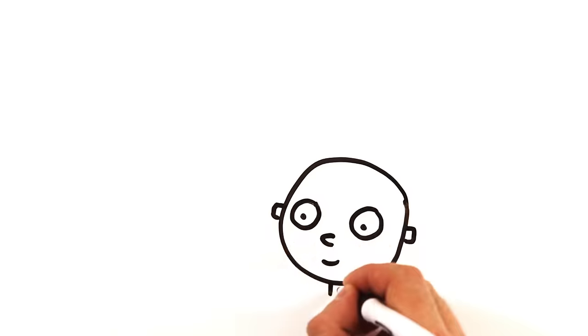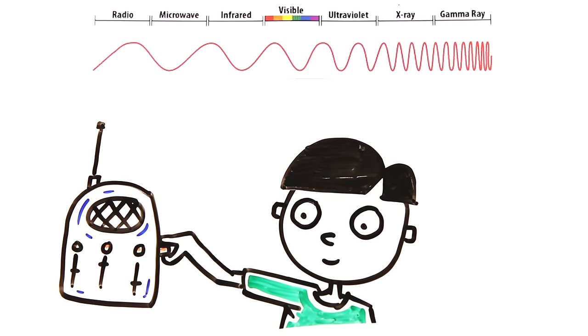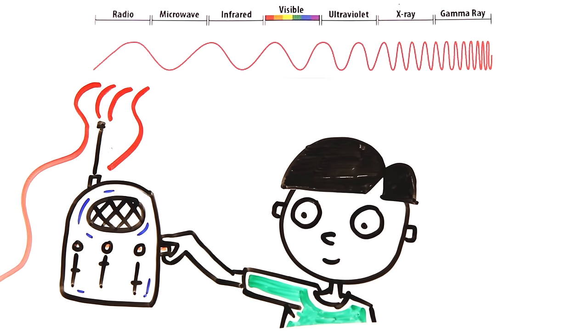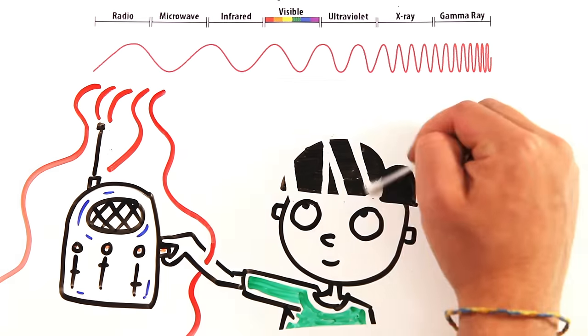When you tune a radio to a station, you pick up the information that is being sent out via electromagnetic waves at a particular frequency. In this case, they're radio waves. These waves mostly just pass through our bodies without interacting at all, but they're on the same spectrum as the visible light we see, just different in size.